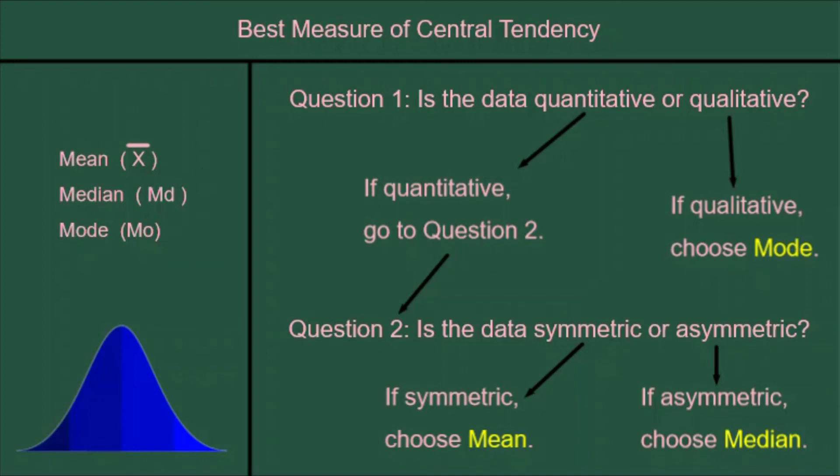Now we look at how we justify our answer if we chose mean and median. If we choose mean, we justify by saying the data is quantitative and symmetric.